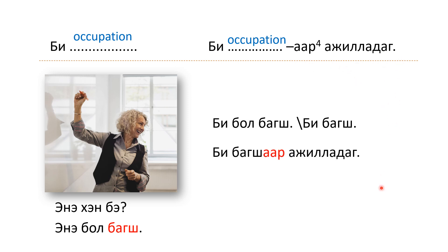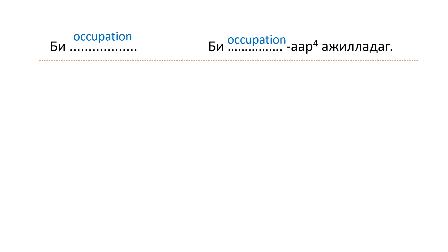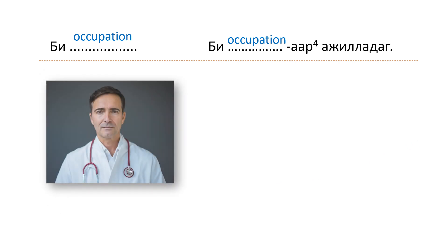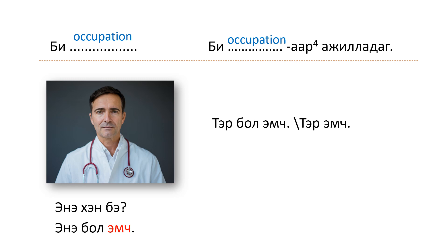Using this sentence structure: 'bi bagshaar ajildag' — 'bagsh' plus the suffix 'aar' — means 'I work as a teacher.' Here you notice we use 'aar' and not 'eer' because of vowel harmony.